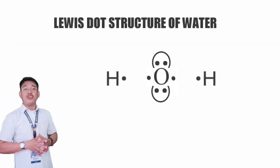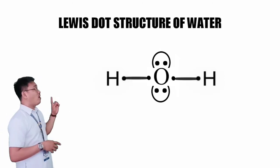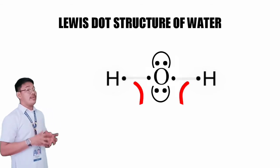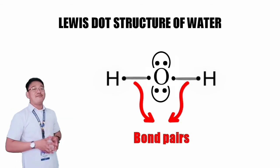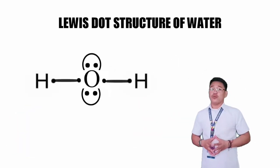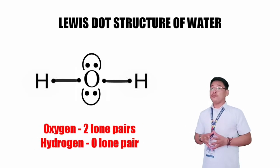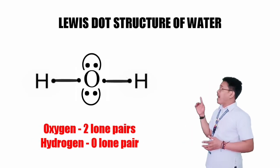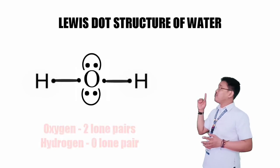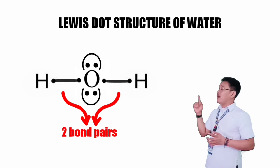So, for the water molecule, you simply draw a line connecting the bonding electrons of oxygen and hydrogen to show the chemical bond. We call these the bond pairs. In the Lewis structure of water molecule, oxygen as the central atom has two lone pairs while each hydrogen bonded to it has none. Oxygen and hydrogen are bonded through single bonds, which count as two bond pairs.